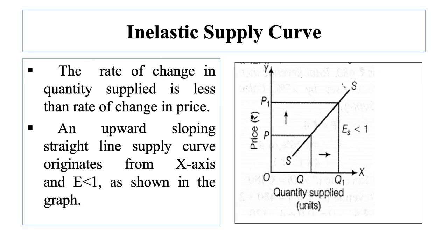The next case is when elasticity of supply is less than 1. This is known as inelastic supply. In this situation, the rate of change in quantity supplied is less than the rate of change in price. An upward sloping straight line supply curve originates from the X-axis, and elasticity is less than 1, as shown in the graph. An example of inelastic supply is the supply of non-necessity goods such as soft drinks, where there are many substitutes and choices. A change in price will not have much impact on supply, since consumers would opt for other brands or close substitutes.